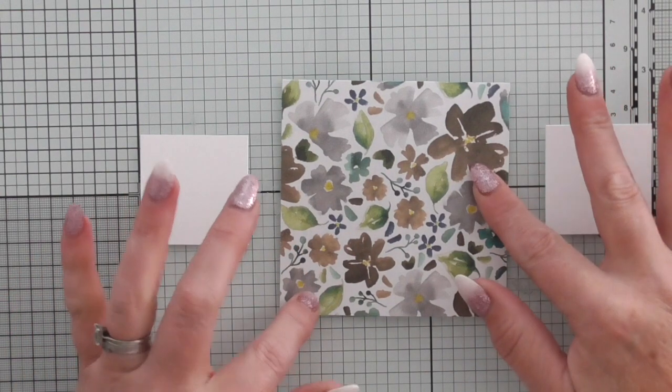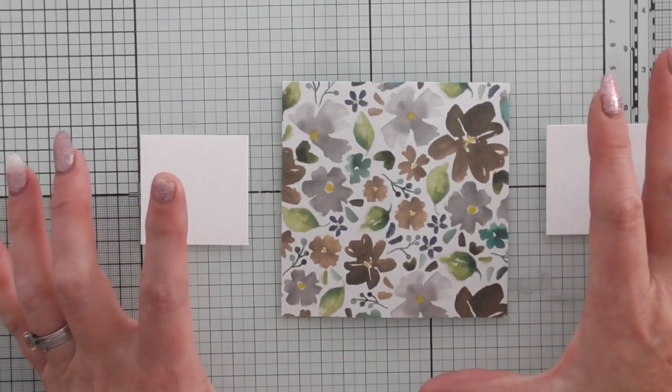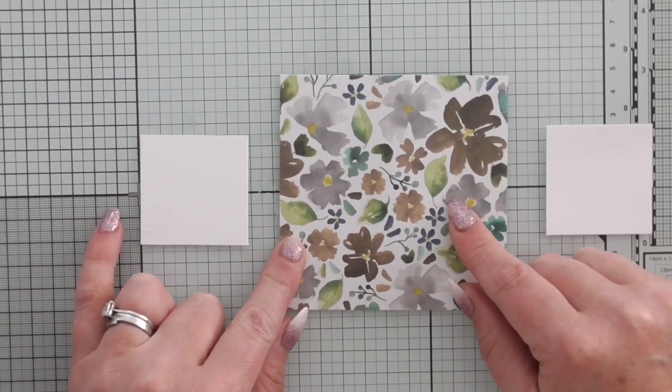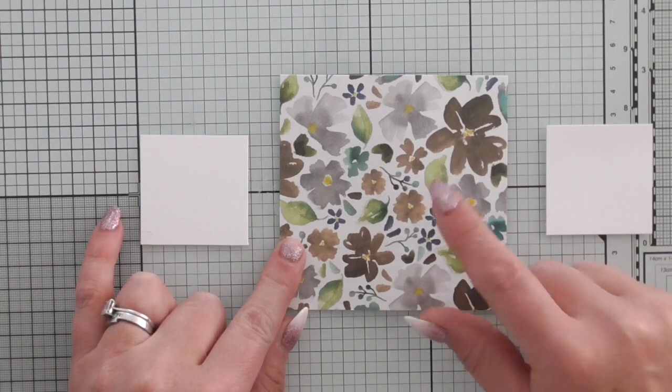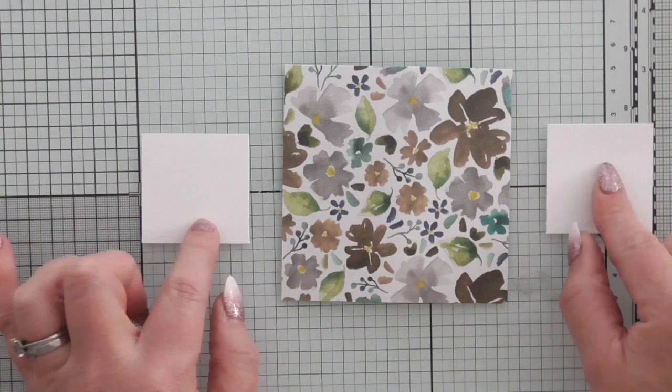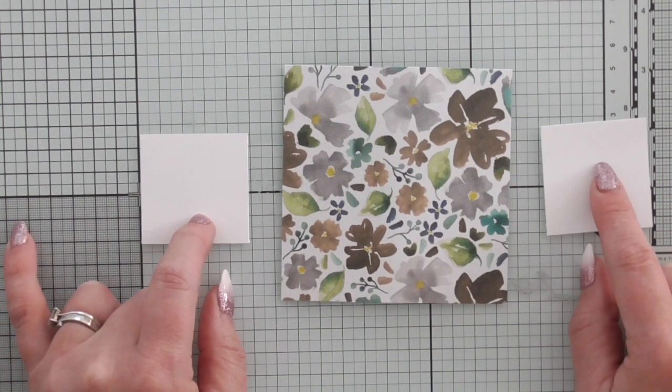She has nothing to do with stamping up but I saw this is quite an old video and I just fell in love with it and wanted to have a go. So what you need are six pieces of DSP cut to 4x4. I happen to be using the frosted florals. And then you need two pieces of cardstock measuring 1 7/8 by 1 7/8.